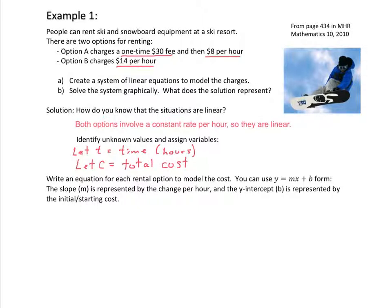Next, we can write an equation for each rental option to model the cost. You can use the y equals mx plus b form where the slope represents the change per hour and the y intercept represents the initial or starting cost. For option A, we're going to have the cost of the rental is equal to $8 times the number of hours would give us the total cost for the hours that we rented plus the initial fee of $30. And that gives us one of our equations.